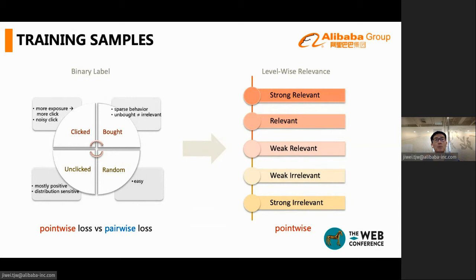If we use bought products as the positive, they will be more accurate. But buy is much more sparse, and unbought also doesn't mean irrelevant. A more important problem is the negative samples. If we use the unclicked products, in fact, they are mostly irrelevant. If we use random sampled products as negative, they are too easy, and the model will easily converge, but performs poorly when faced with online difficult negatives.